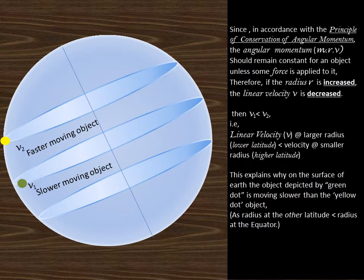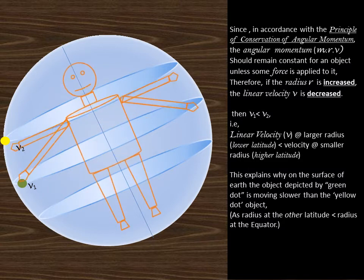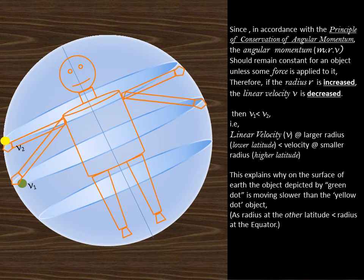Since, in accordance with the principle of conservation of angular momentum, the angular momentum (product of mass, radius and linear velocity) should remain constant for an object unless some force is applied to it. Therefore, if the radius r is increased, the linear velocity v is decreased. Then v1 is less than v2.